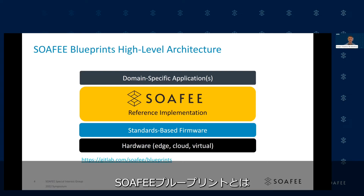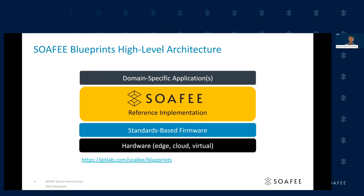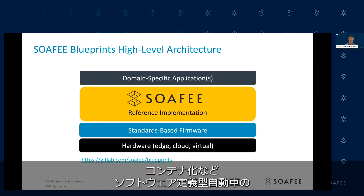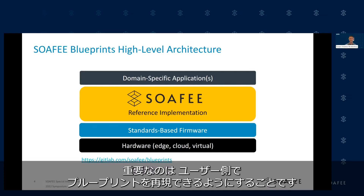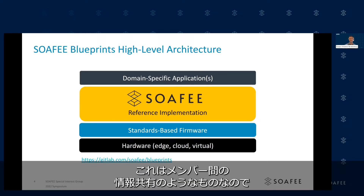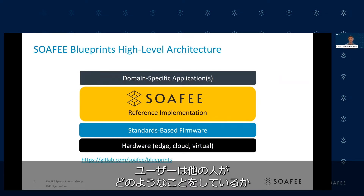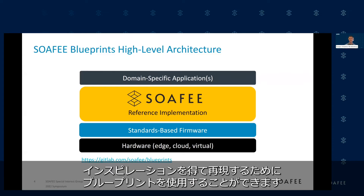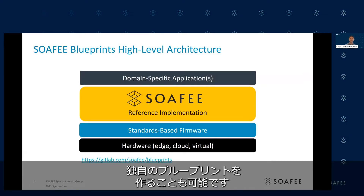The SOFI blueprints is an initiative driven by our members to materialize the concepts behind our vision of how to enable the software-defined vehicle. This is done by deploying domain-specific applications in a way which leverages features, for example containerization, which SOFI envisions as necessary to realize the software-defined vehicle. An important aspect of a blueprint is for a user to be able to reproduce it on their end — this is information sharing between our members — and this requires well-written and very clear documentation. A user can consume a blueprint as-is, just replicating step-by-step for inspiration, or as a foundation on which to make modifications to suit their needs, making it their own.